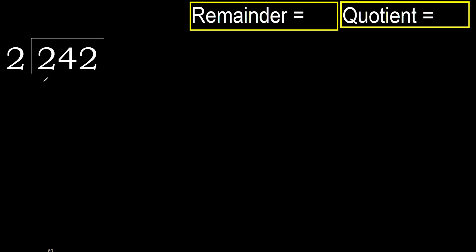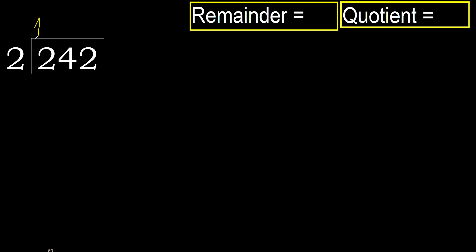242 divided by 2. 2 is not less, therefore work with 2. 2 multiplied by which number is nearest to 2 but not greater? 2 multiplied by 2 is 4 — 4 is greater. Multiply by 1 is 2, it is not greater. Subtract.